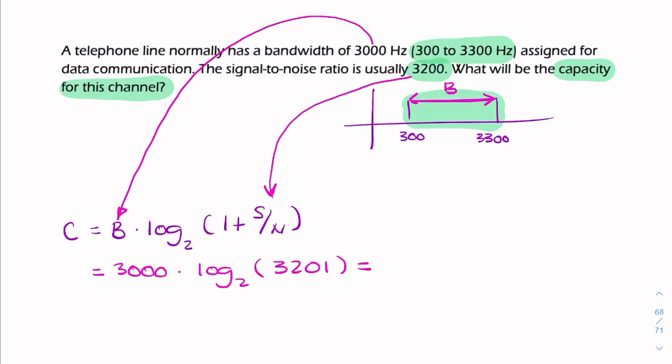That'll give you 34.9 kilobits per second. We can't transmit data at a rate exceeding 34.9 kilobits per second error-free. That's what the channel capacity means—that's the theoretical upper limit to how fast we can transmit data down this telephone line error-free.